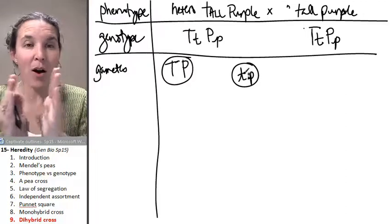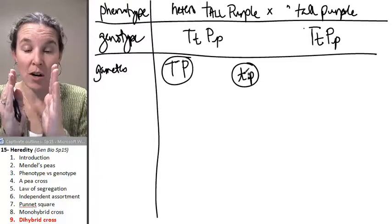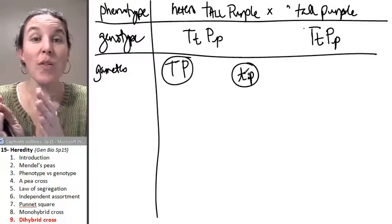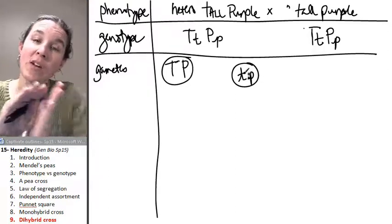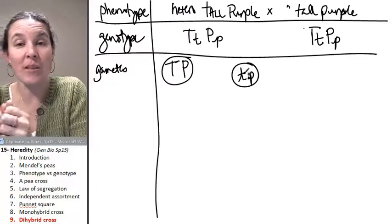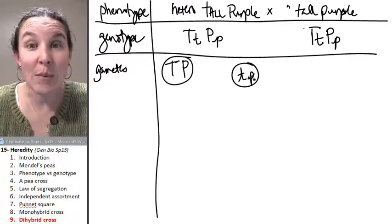so that all the recessives were on one side and all the dominants were on the other, these would be the gametes that would result.